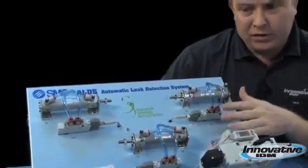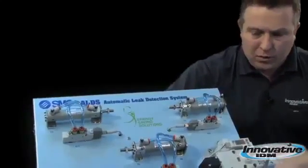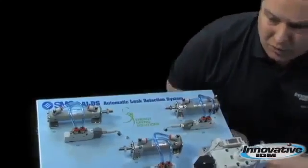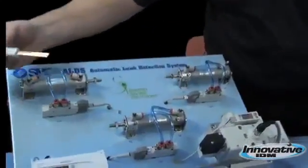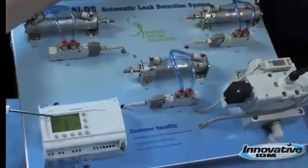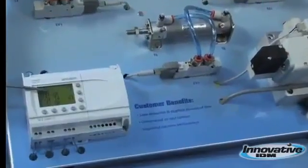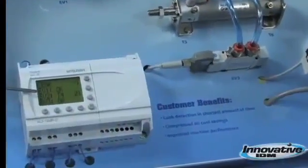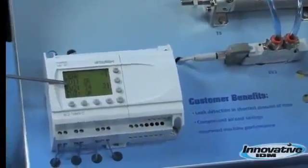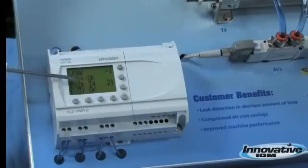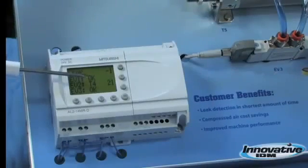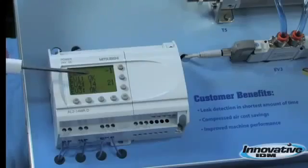When the ALDS has finished its cycle, it will have sent a notice to your PLC to notify you if the station was okay or if you had a failure, where the failure was located. In this particular case, the failure was at location T4.